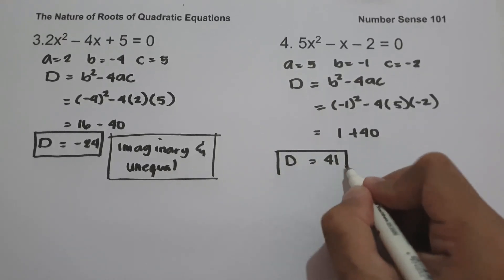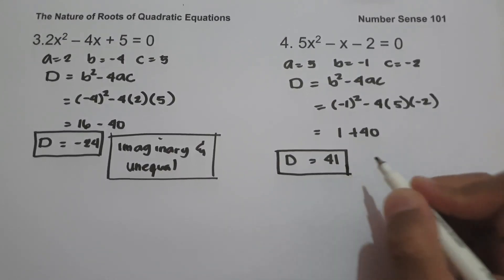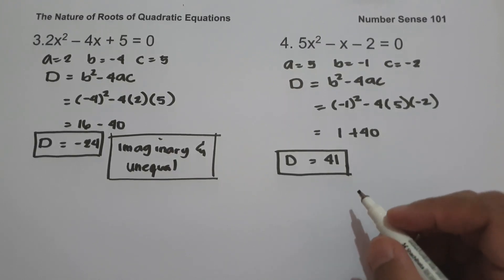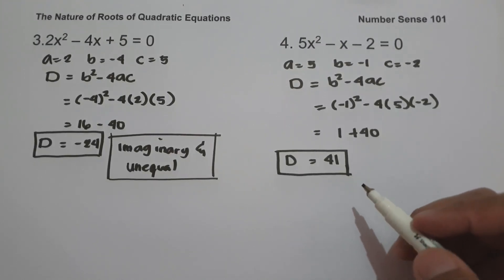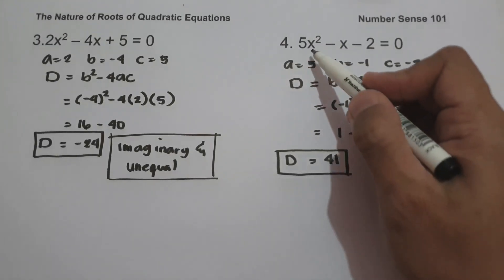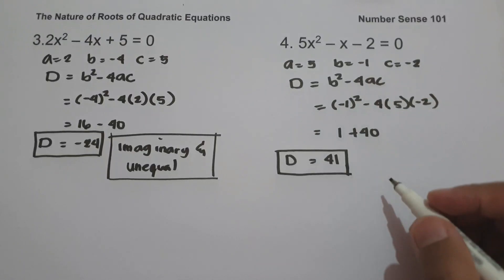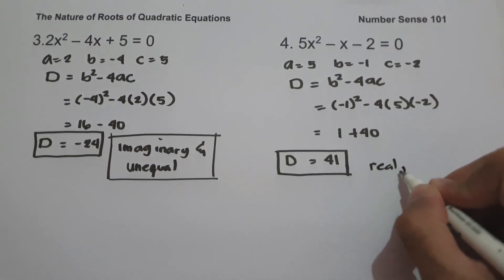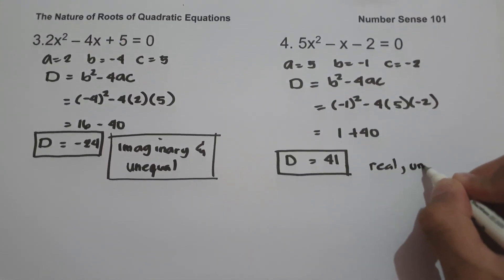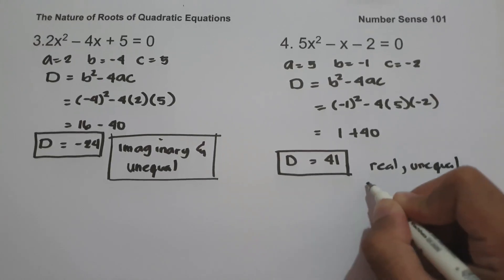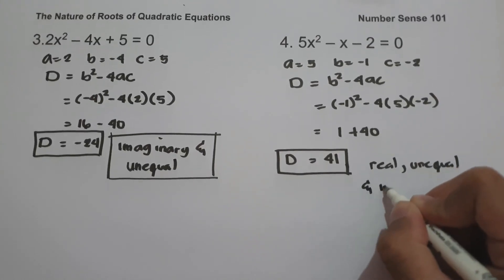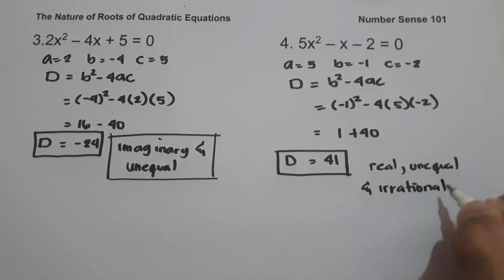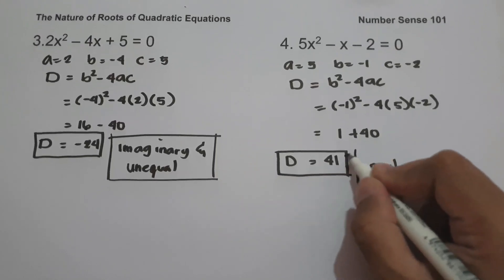Since the discriminant is greater than 0, but 41 is not a perfect square, therefore the roots of 5x squared minus x minus 2 equals 0 are real, unequal, and irrational. And this will be our answer.